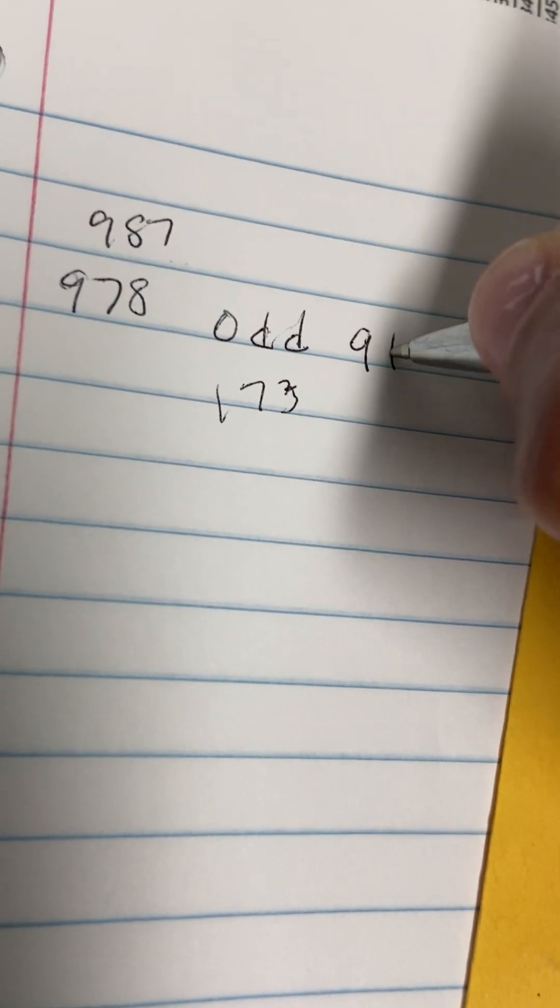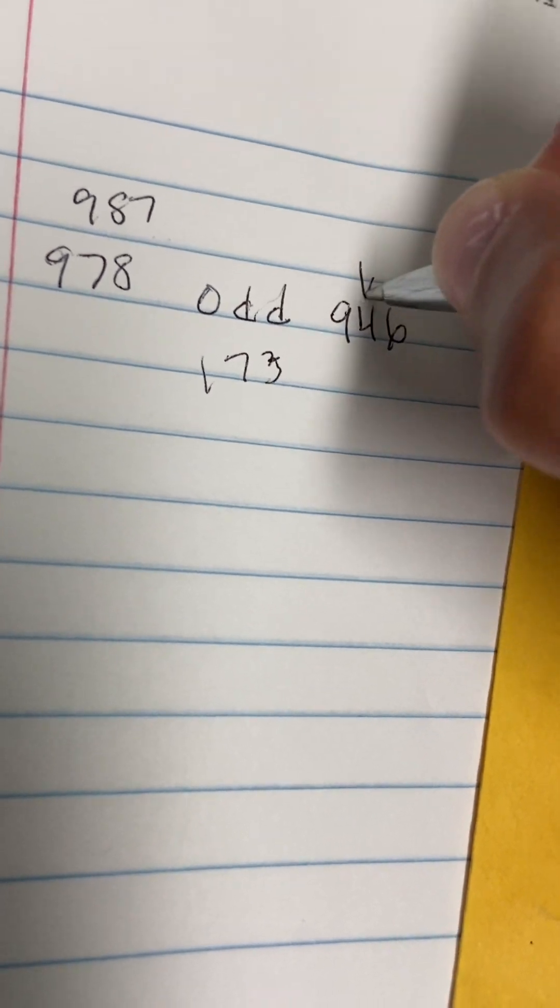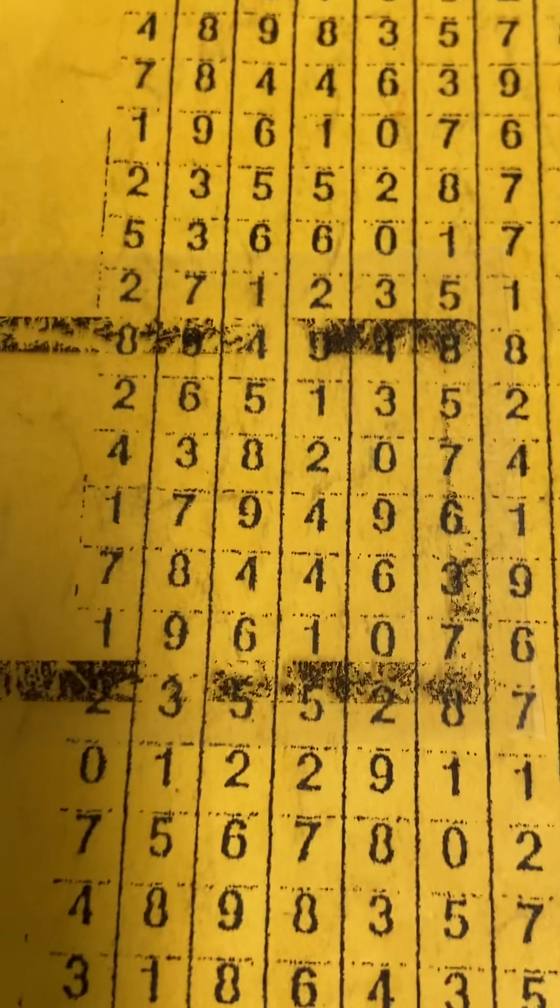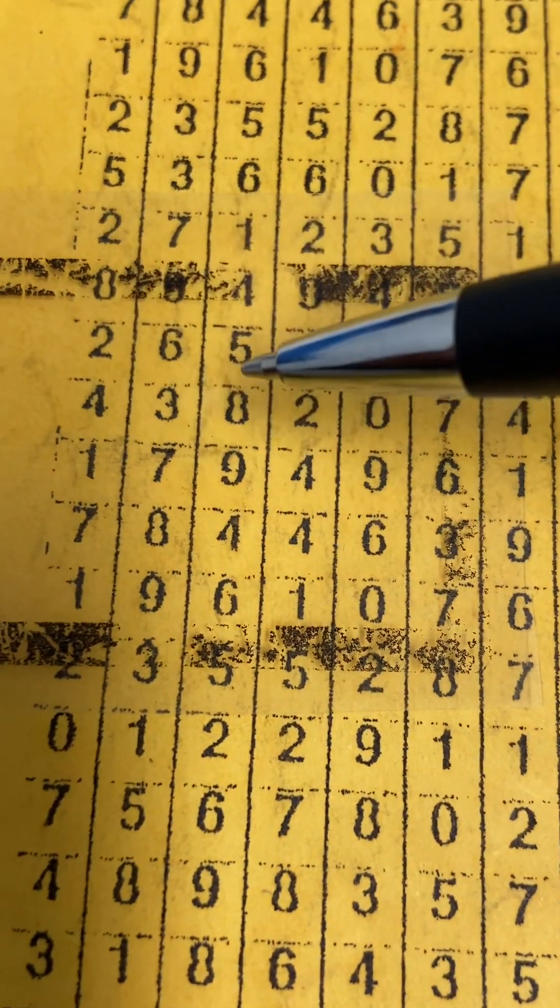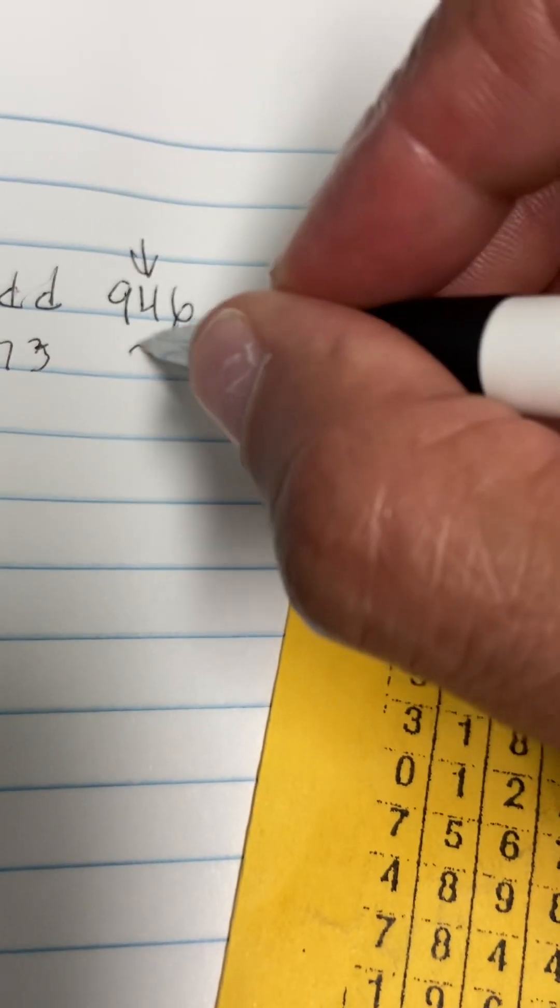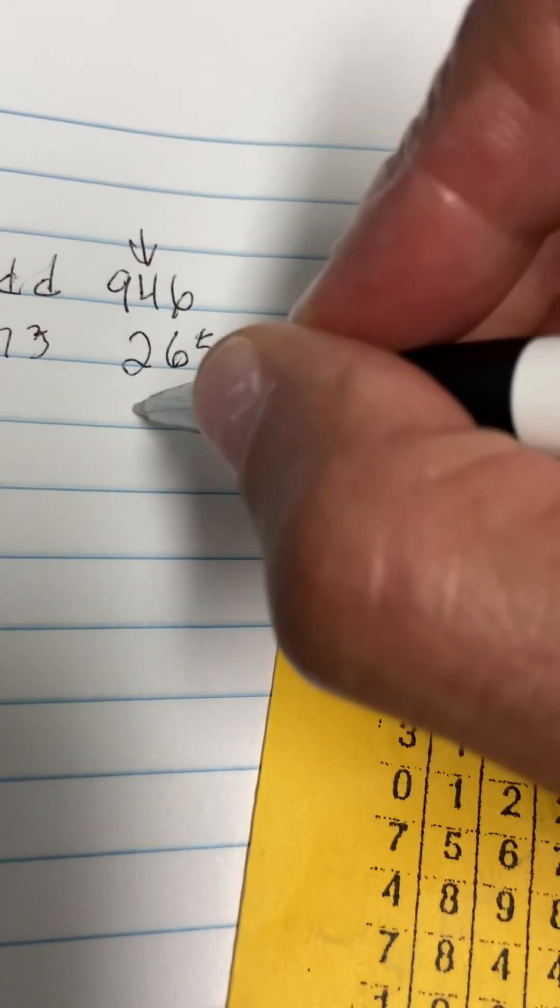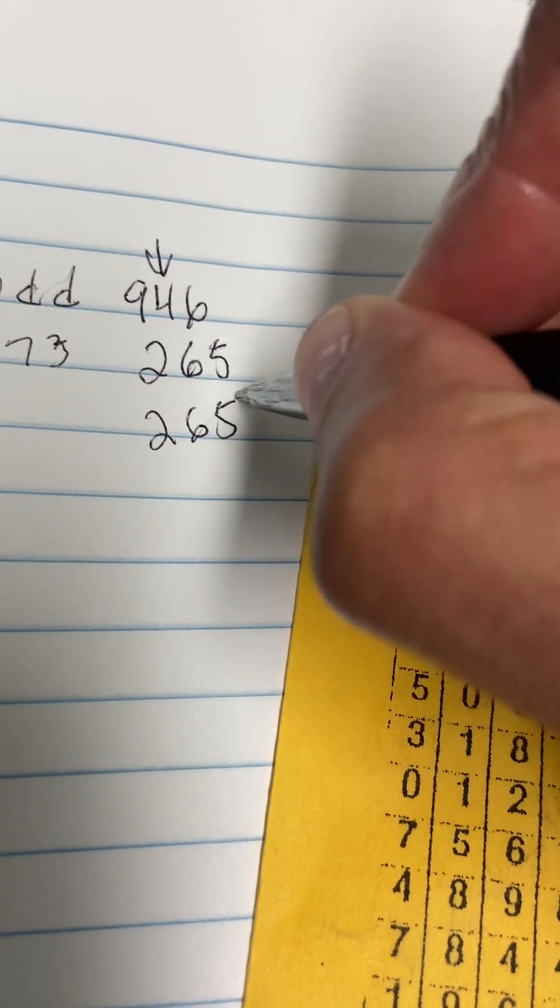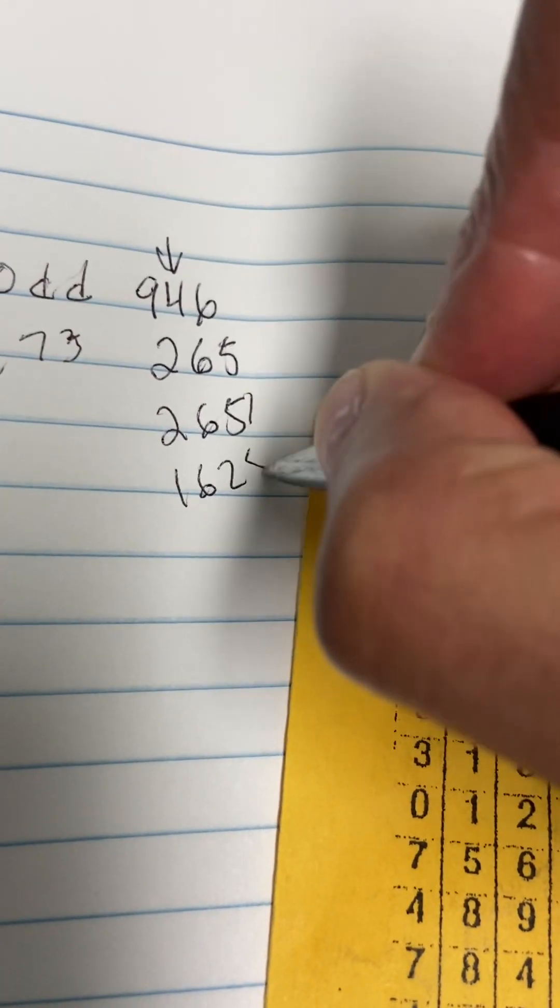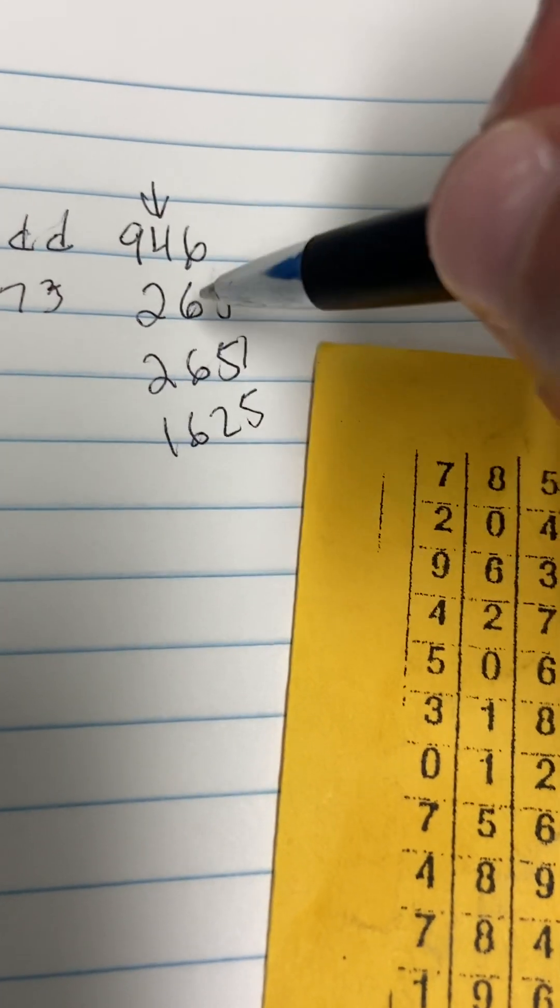946 and NC, we're going to go real slim on these numbers man. I like 946. What else do we have? I'm going to go ahead and say this is a 265 for Carolina. Now 6515 or 1625. I'm going to go ahead and just leave you with these numbers right here if you just want to play.